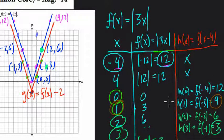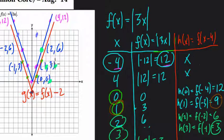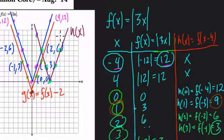So we can keep going with this until we find all the points we need, or we can just take our original function and shift everything to the right four. If we connect these dots, we get H(x), which equals F(x) shifted — the blue absolute value function — shifted over to the right by four. Hope this helped.